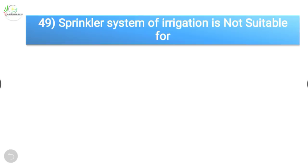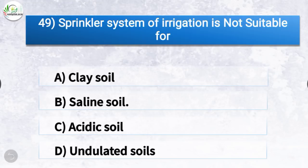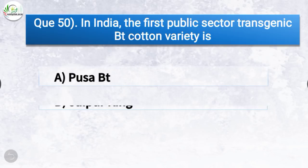Question number 49: Sprinkler system of irrigation is not suitable for? The correct answer is option B, saline soil. Sprinkler system of irrigation is not suitable for saline soil.